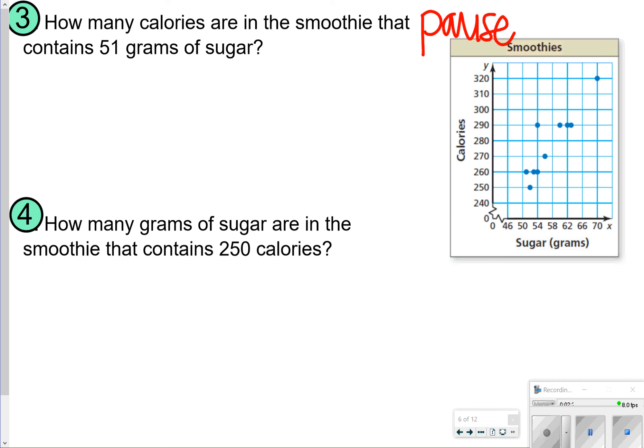So for number three, we're looking for 51 grams, and 51 would be right after 50, so I estimated that it would be about 260 calories. For number four, how many grams of sugar in the smoothie that contains 250 calories, and 250 looks right across to give us about 52 grams of sugar.